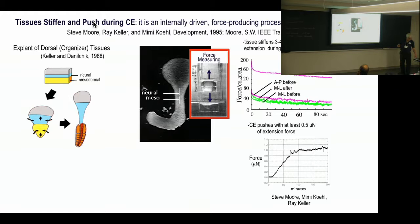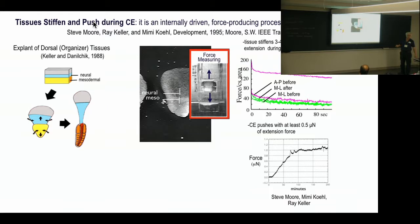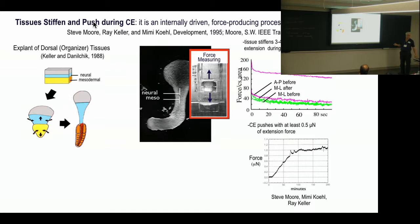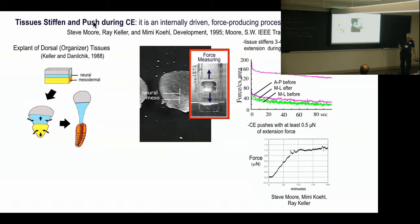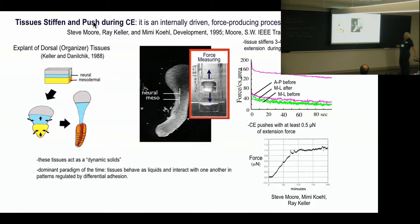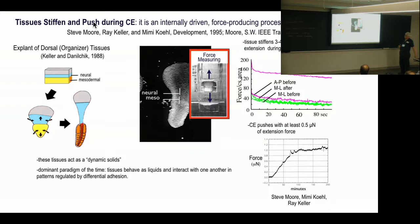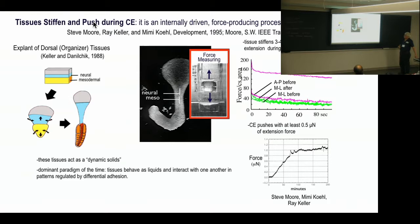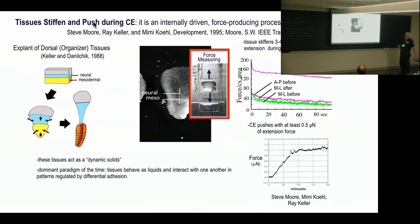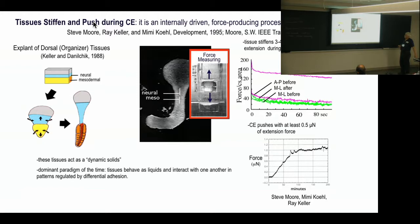And we measured pushing force of about a half a micronewton for two of these things. But since then, Lance Davidson has made measurements that may have a much more realistic apposition of the measuring device to the tissue and it can push with much greater strength than that. Some 40 Pascals or something like that. And it's much, it eventually, as it starts laying down matrix, building more cytoskeleton becomes much stiffer. Now, back in that day, the dominant paradigm was that tissues behave as liquids and interact with one another in ways that are differentiated with differential adhesion.